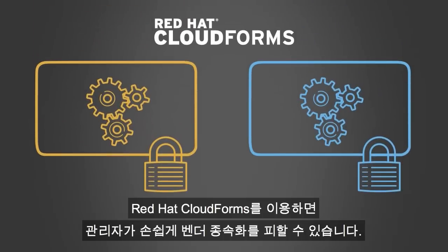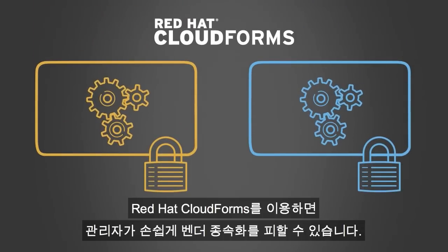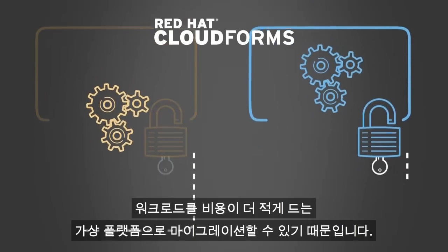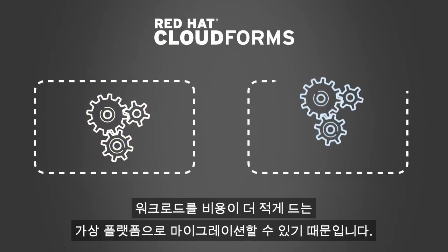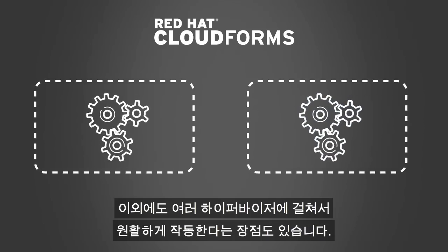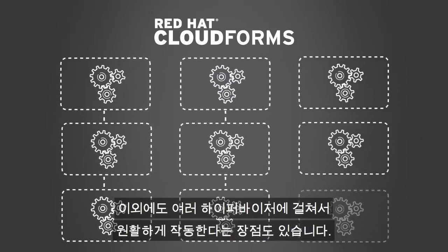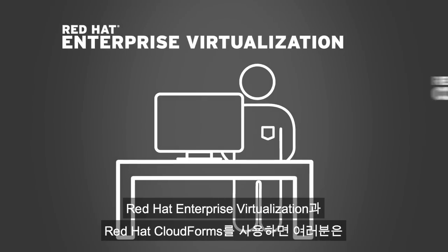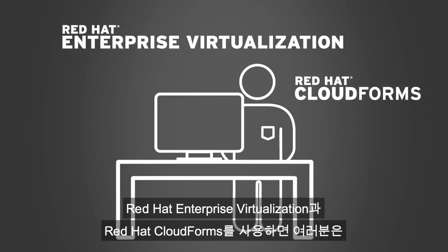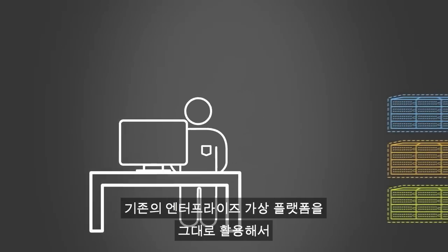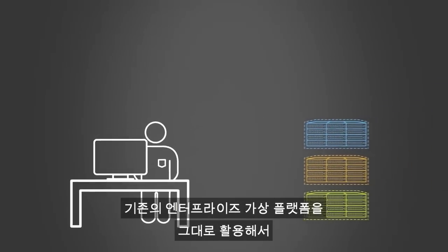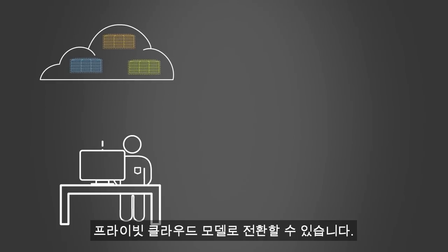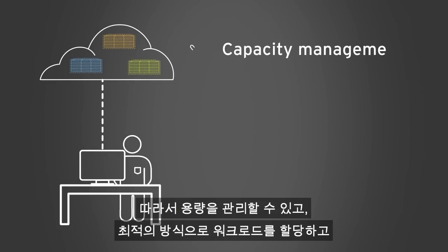With Red Hat CloudForms, administrators can avoid vendor lock-in by easily migrating workloads to lower-cost virtual platforms and obtaining seamless operations across multiple hypervisors. Red Hat Enterprise Virtualization and Red Hat CloudForms enable you to leverage your existing enterprise virtual platforms and transform them into private cloud models that enable capacity management.